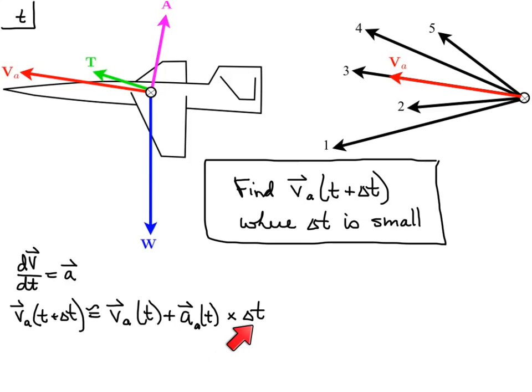Right, so for small delta t this will be a good approximation to the velocity a short time later. So now the acceleration we can use Newton to relate the acceleration to the sum of the forces divided by the mass.